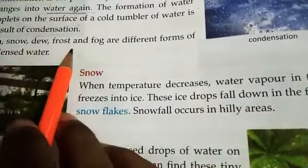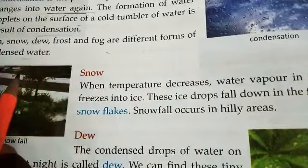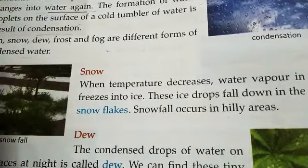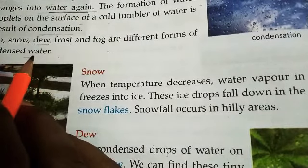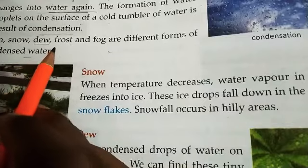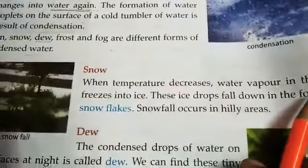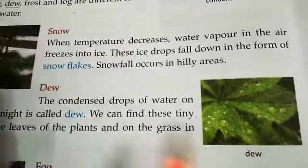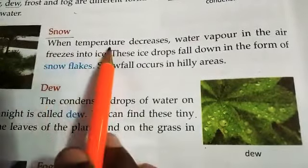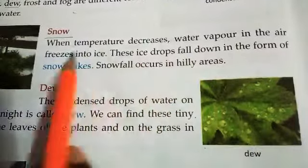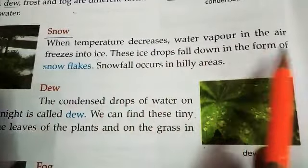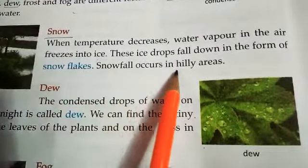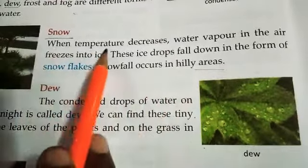Rain, snow, dew, frost, and fog are different forms of condensed water. When the temperature decreases, water vapor in the air freezes into ice, and these ice drops fall down in the form of snow. Snowfall occurs in areas where temperature is very low.